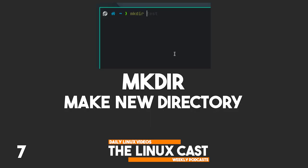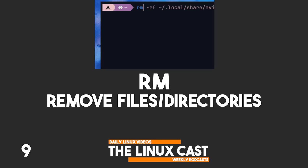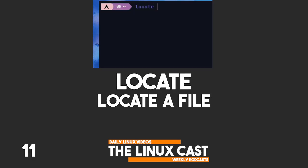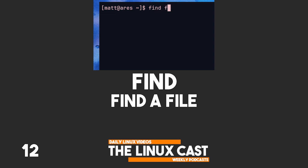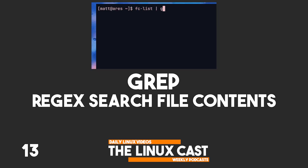mkdir makes a new directory. rmdir removes a directory. rm removes files and directories. touch creates a blank file or updates metadata time info. locate locates a file. find finds a file. grep searches through file contents.